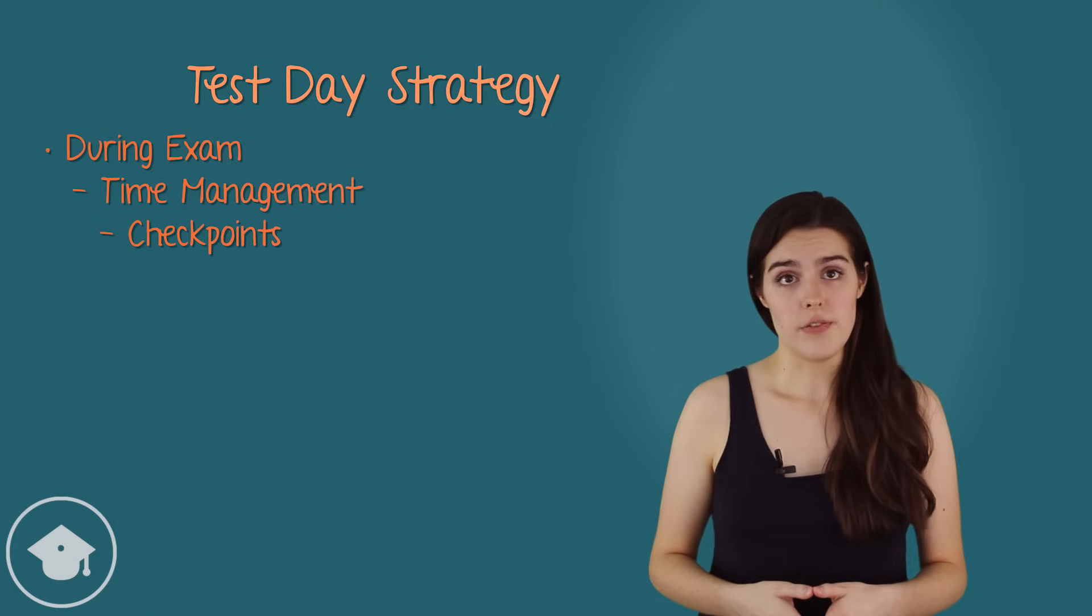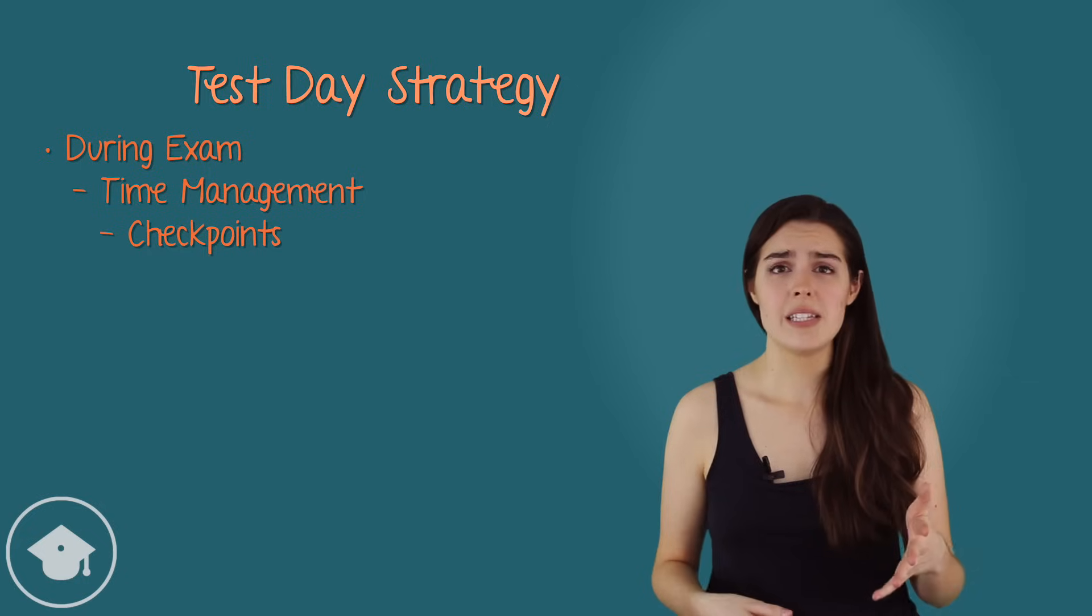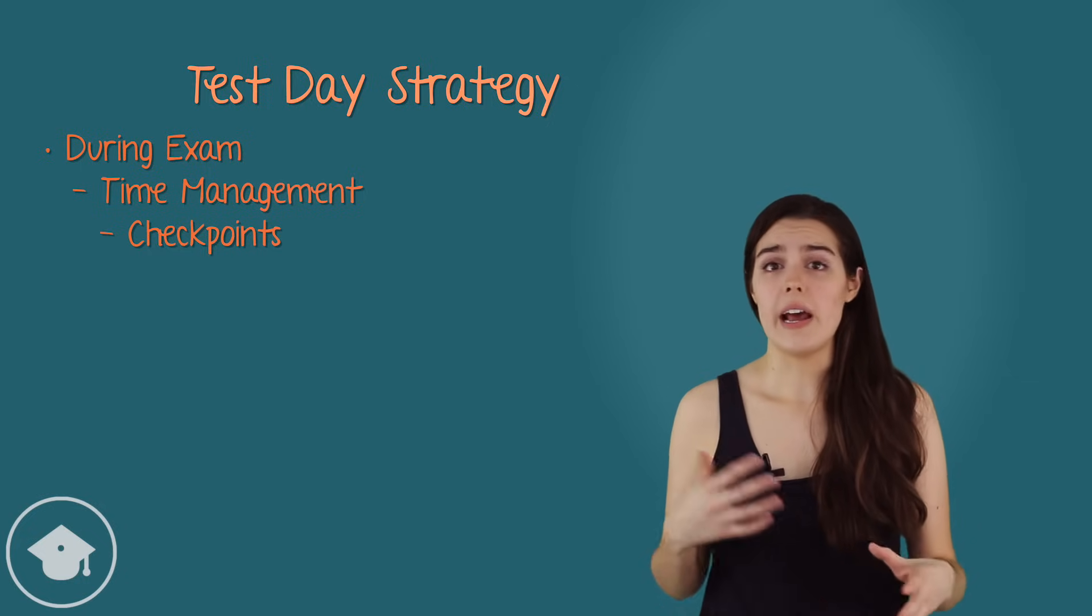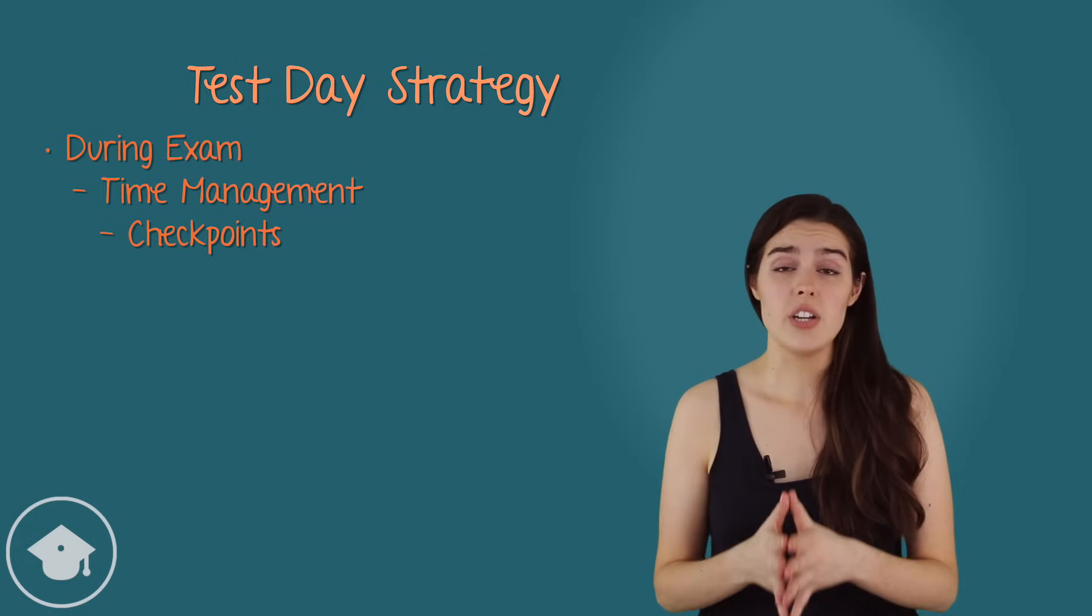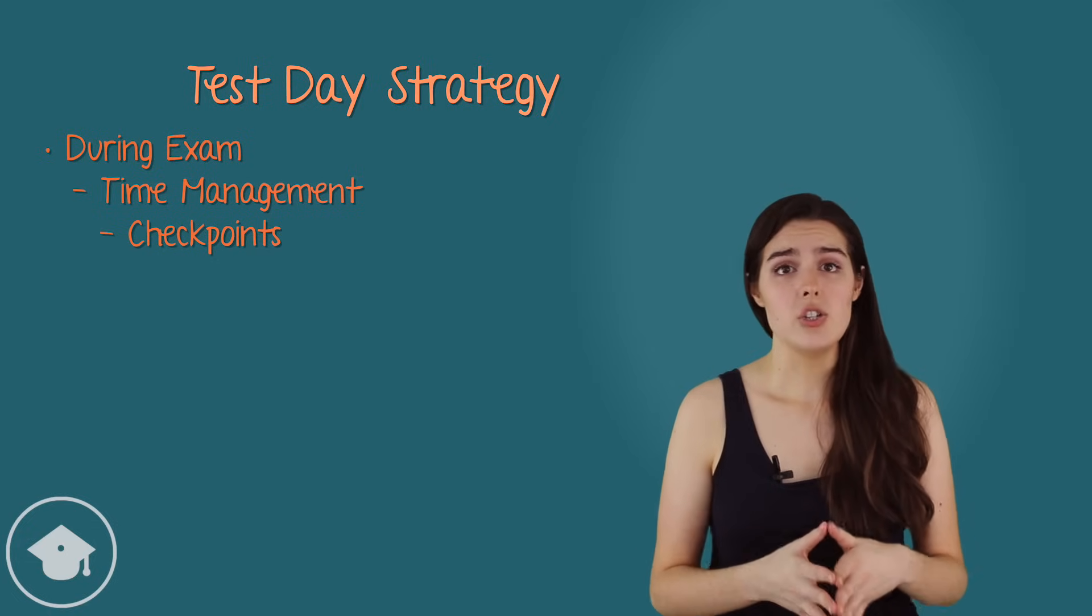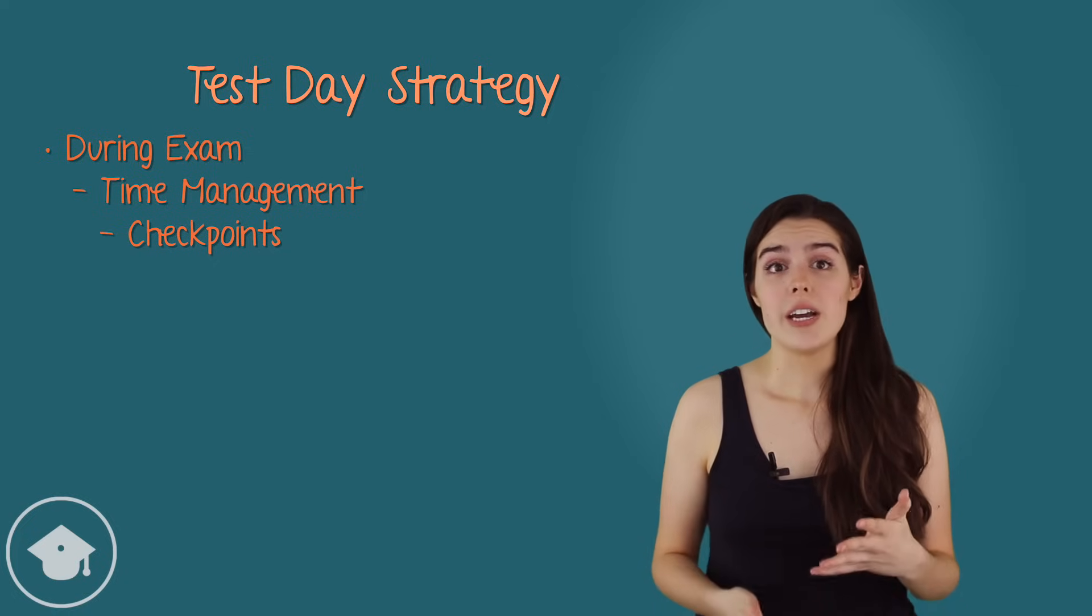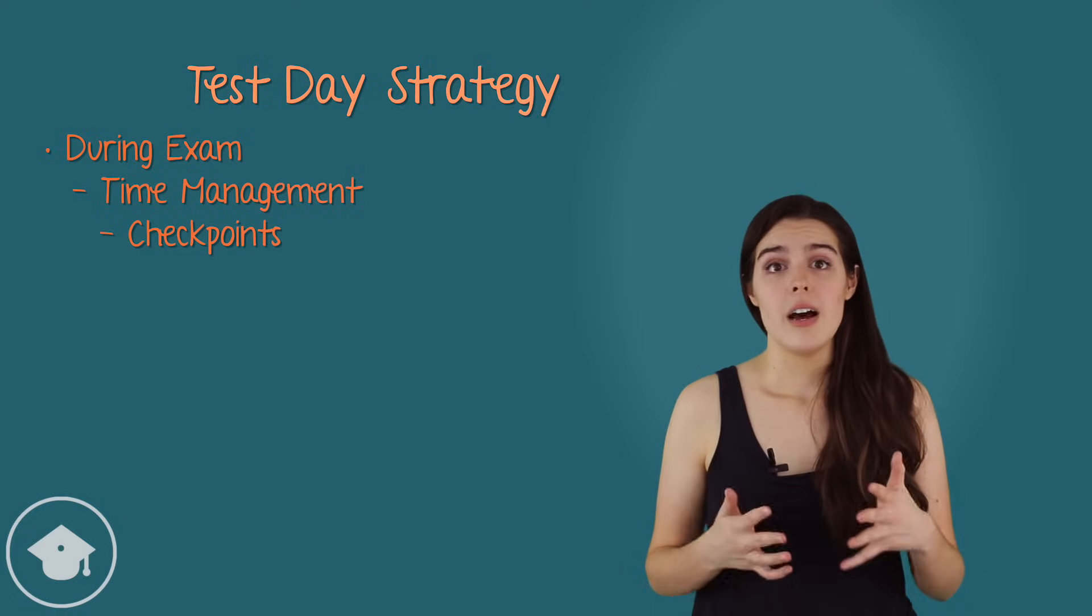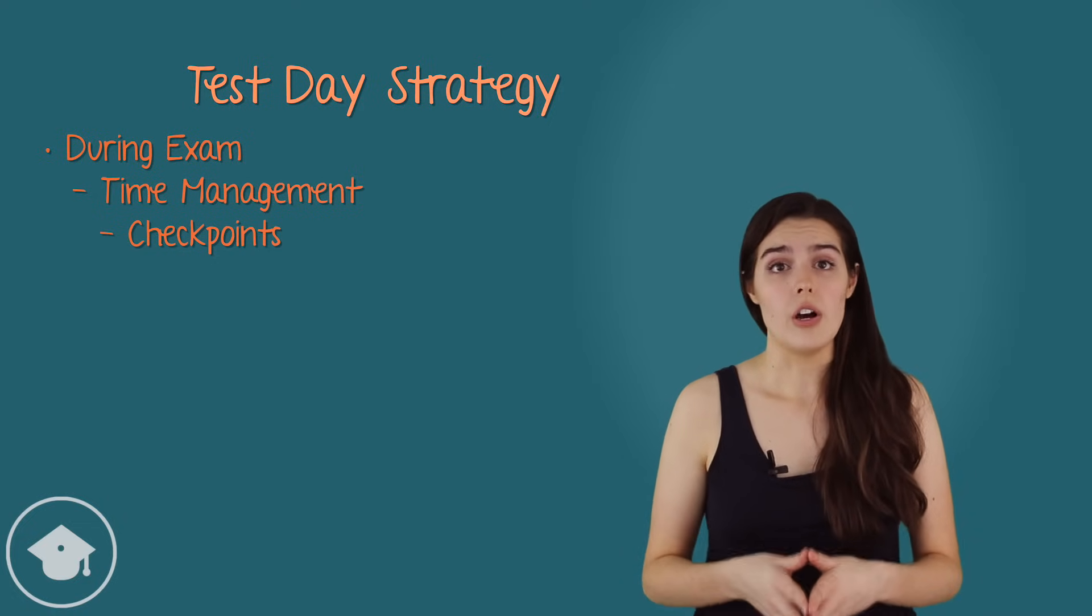To stay on track for timing throughout the section, set checkpoints for yourself. Now, on average, quant questions should take two minutes and verbal questions should take one and a half minutes, but each question will take a different length of time. This means that checking the time after each question will do nothing but distract us. However, we should check in on our timing occasionally. I recommend checking in every five to ten questions to see whether or not we're on track.